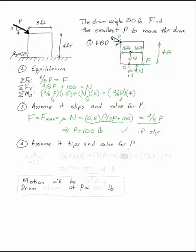Now I want to find out what happens if it tips. If it tips, N no longer acts on the body. That means x is equal to 1.5. So if I substitute that, x equals three halves, or 1.5.